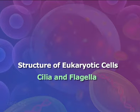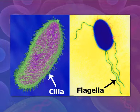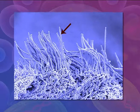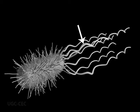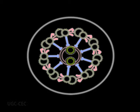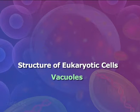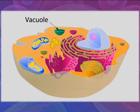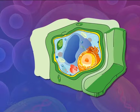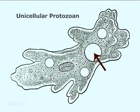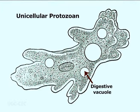Cilia and flagella are structures that project from the cell and assist in movement. Cilia are short, numerous, and hair-like, while flagella are much longer, fewer in number, and whip-like. The cilia and flagella of all eukaryotes are always in a characteristic 9+2 arrangement. A vacuole is a large membranous sac; animal cells have vacuoles but they are much more prominent in plant cells. Vacuoles in unicellular protozoans include contractile vacuoles for ridding the cell of excess water and digestive vacuoles for breaking down nutrients.